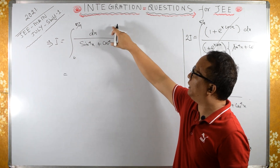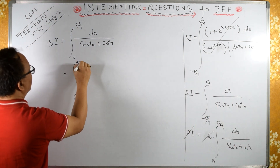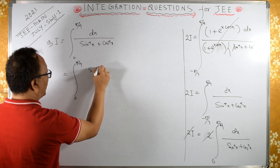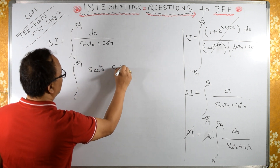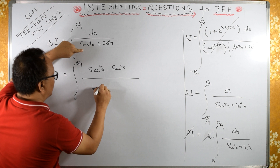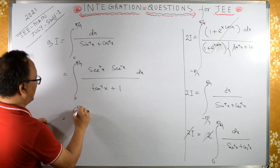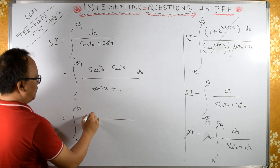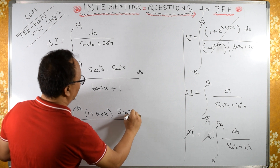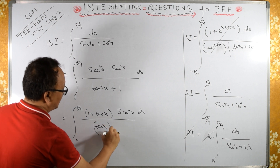Now I will divide numerator and denominator by cos⁴x. Dividing by cos⁴x, the integral from 0 to π/4 becomes sec⁴x upon (tan⁴x plus 1) dx. I can write sec⁴x as sec²x times sec²x, and sec²x equals 1 plus tan²x. So the integral becomes (1 + tan²x)·sec²x dx upon (tan⁴x plus 1).